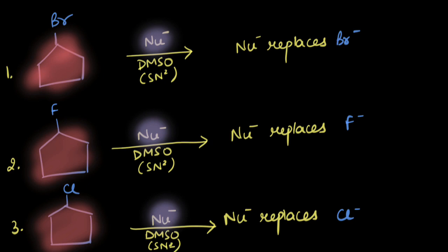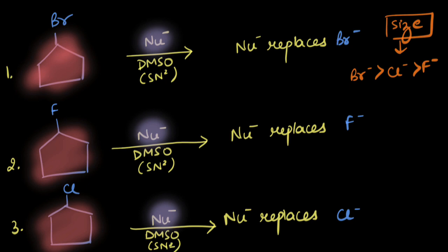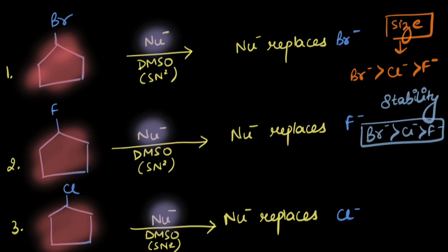These ions belong to the same group. Looking at size, the bromide ion is the largest, followed by the chloride ion, then the fluoride ion. The larger the size of the ion, the more spread out the charge is, the lesser the charge per unit area, the lesser the potential energy, and the more stable the ion. So the stability order is: Br- > Cl- > F-.